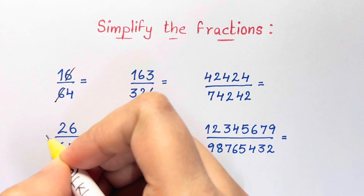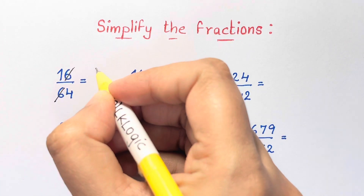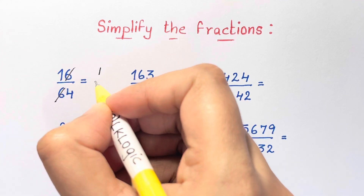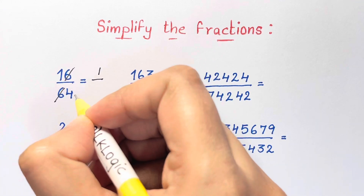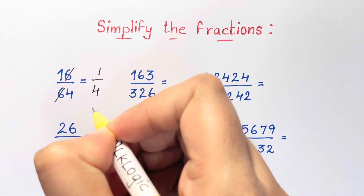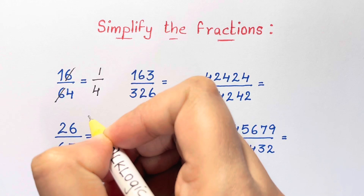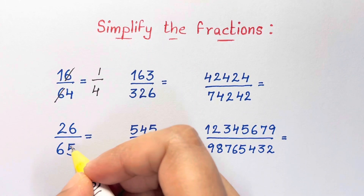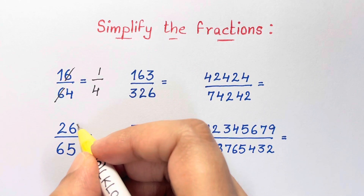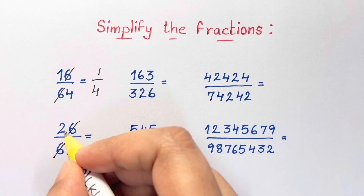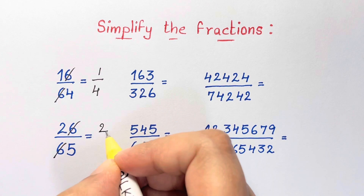I said, alright, I'll cancel out the 6s and that will leave me with 1 divided by 4. I can do the same thing on the next problem to cancel out the 6s, and that would leave me with 2 over 5.